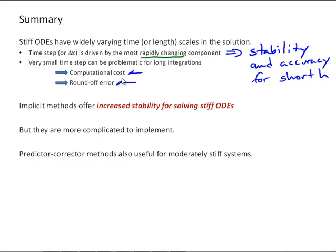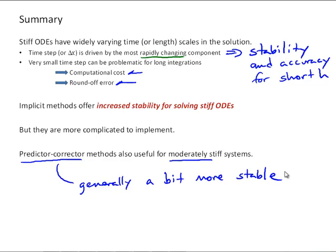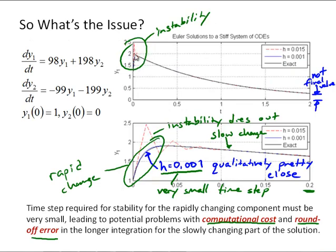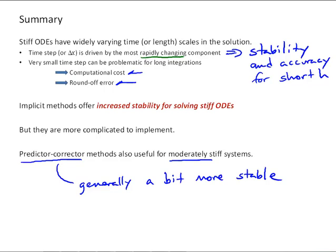Implicit methods offer increased stability for solving those stiff ODEs, but they're more complicated to implement. They require setting up a system of algebraic equations, and then using one of the other methods that we've covered in this class to solve that system. We can use the predictor-corrector approach to get around that requirement, that difficulty for the implicit method, but they're only going to be useful for moderately stiff systems. But they are generally a bit more stable. Lastly, how do you recognize a stiff system of differential equations? Sometimes that can be tricky, but the main indicator that a system is stiff that you'll become familiar with is when we see these short oscillations happening around a quickly changing component in the system. That's an indicator of stiffness. There are analytical approaches to show that a system is stiff, but those are beyond the scope of this class. And that concludes this video.